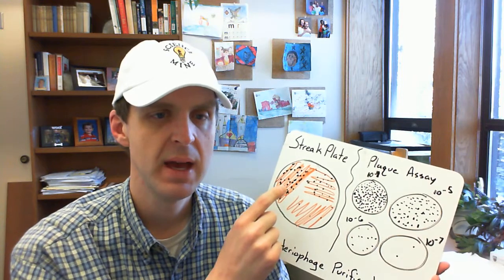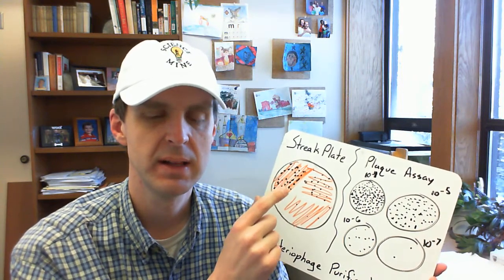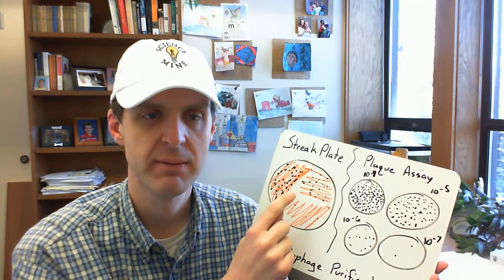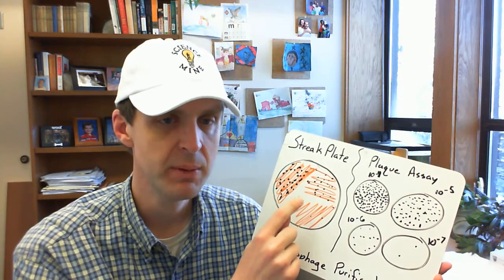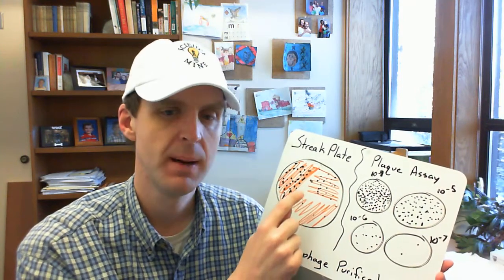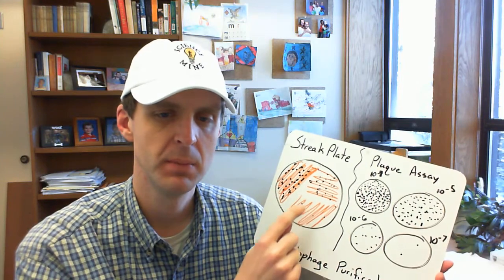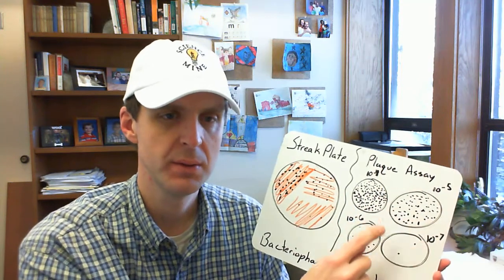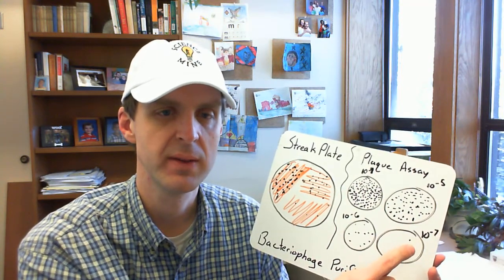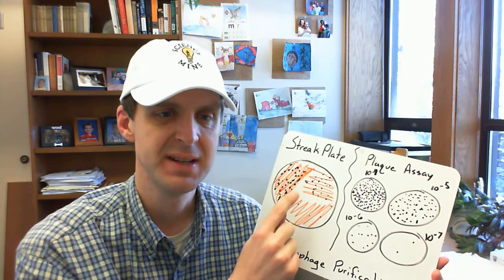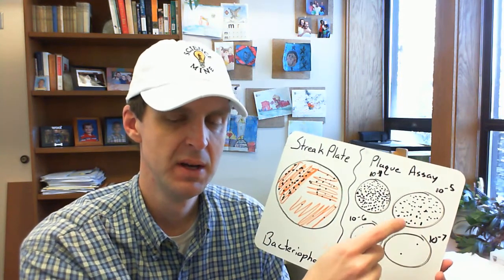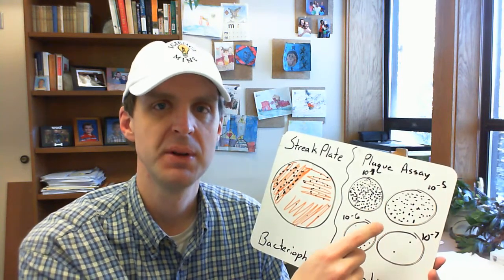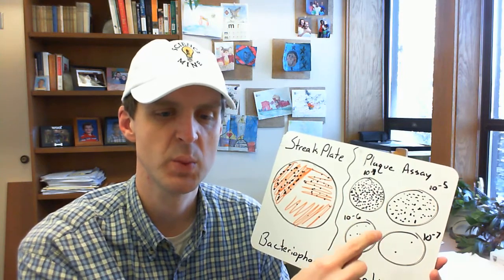And so what we're going to do in class is that we're going to do a streak plate this week with people that have viruses, bacteriophage from the spot test last week. And then after you do one round of purification with the streak plate we're going to then learn how to do the round of purification during the plaque assay. So the first one's easier and gets done quicker, second one is going to be making sure that we're getting a clonal population.